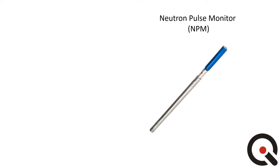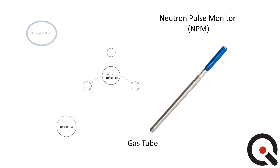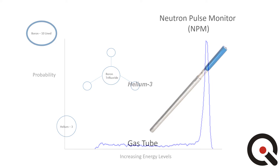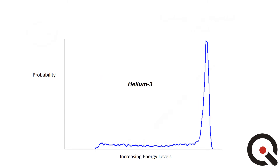The NPM works by attaching to a proportional neutron detector, which consists of a tube filled with either helium-3 or boron trifluoride gas, or a tube lined with boron-10. This measures and logs the proportion of neutron events that occur at various energy levels within the tube.